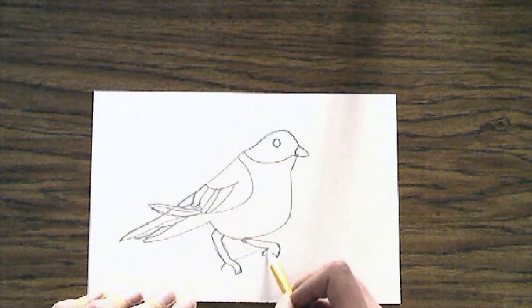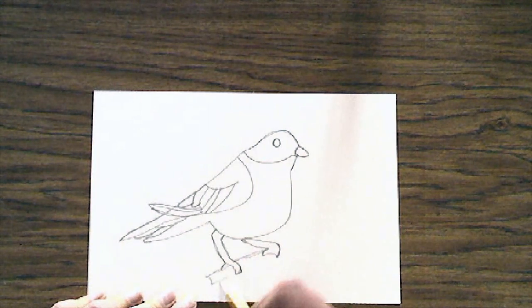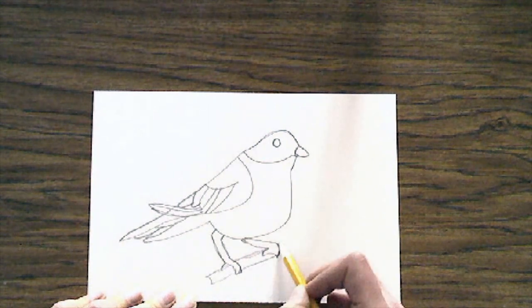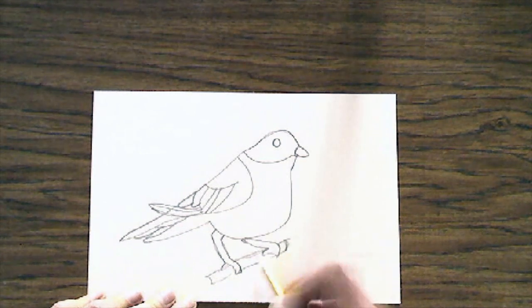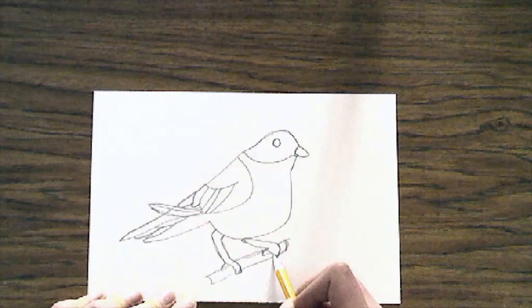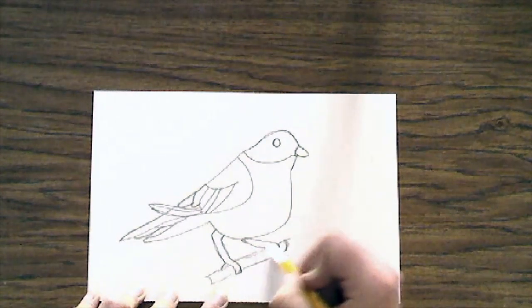Now the next thing to add is our tree branch. We want it to go under his feet that we drew because we want him to look like he's hanging on to the branch. So don't forget, do not draw through your bird's feet. Now if you mess up, you can always erase.